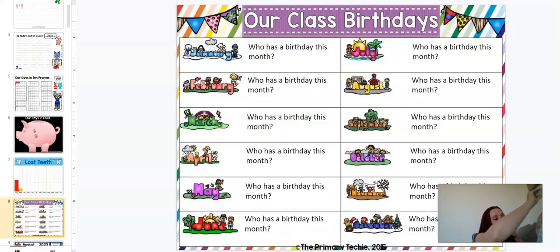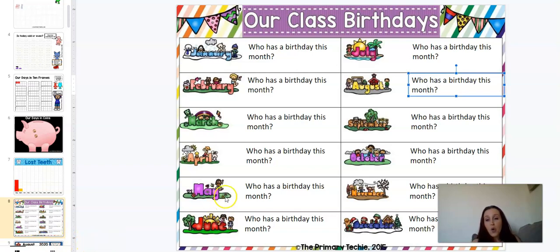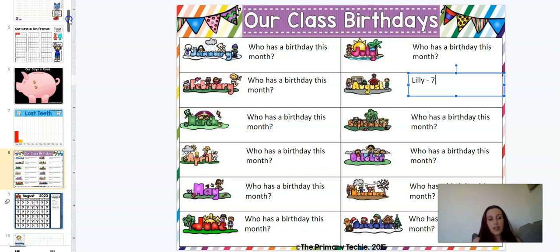Then we have birthdays. So you can type kids' names right here, or you can put in their pictures, which is really fun, whatever one you would rather do. So maybe Lily's birthday was on the 7th, so I could put that. And then your kids can write that in their calendars too, who had a birthday and what day.